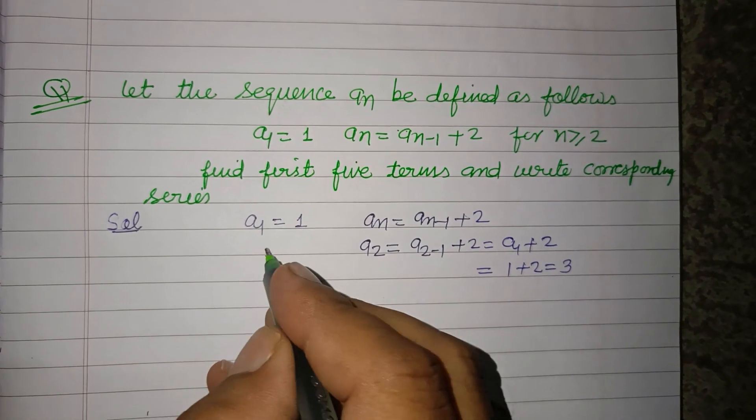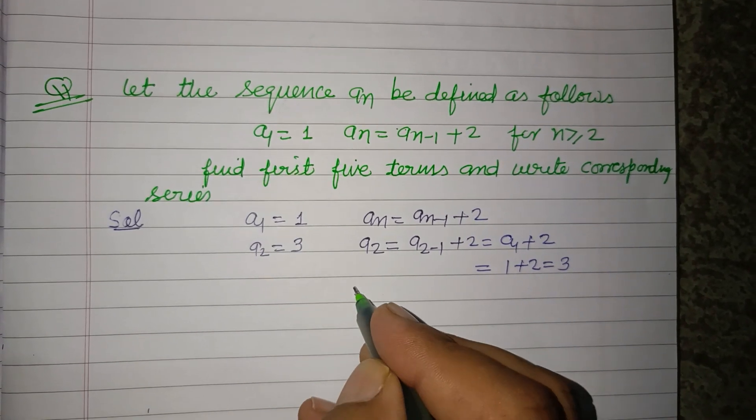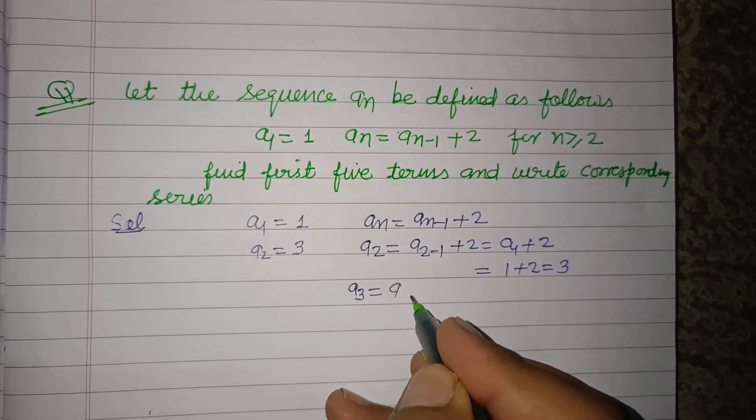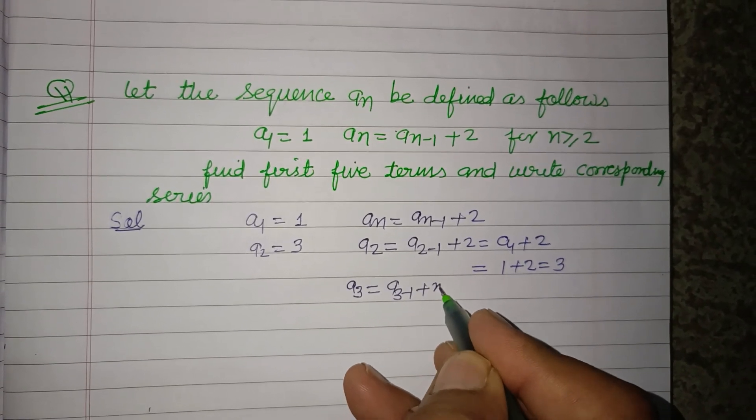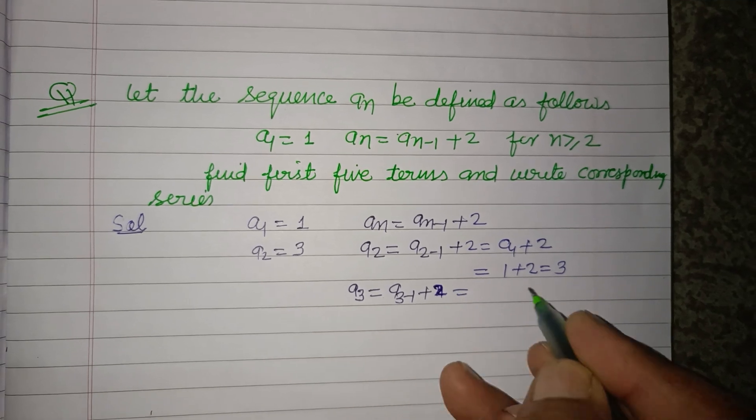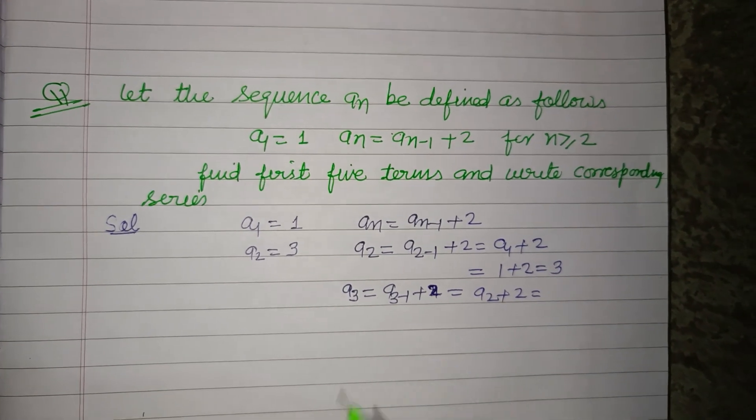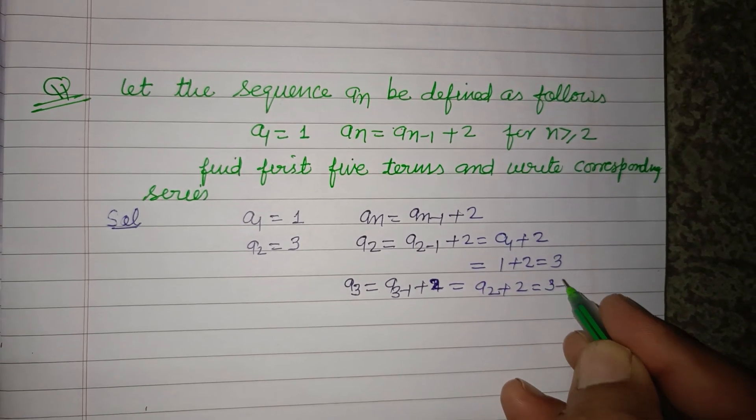So the second term a₂ is 3. Now put n = 3, so this is a₃₋₁ + 2, that is a₂ + 2. a₂ is the earlier obtained value which is 3, so 3 + 2 = 5.